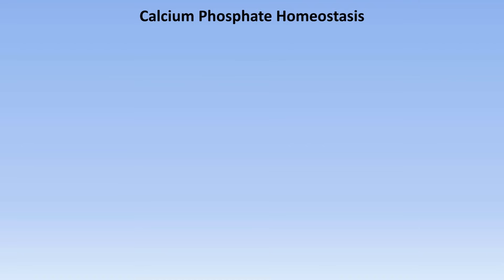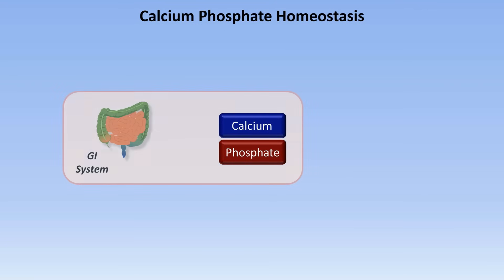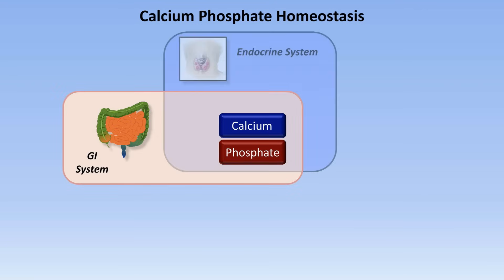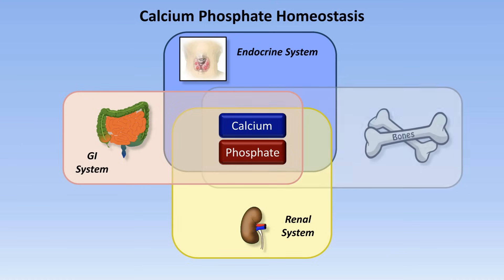Understanding the regulation of calcium and phosphate in the human body is a fascinating exercise in synthesizing knowledge from various domains in both physiology and biochemistry. Calcium and phosphate balance exists at the intersection of four separate yet intertwined physiologic systems: the gastrointestinal system, the endocrine system, the renal system, and our musculoskeletal system, or our bones.